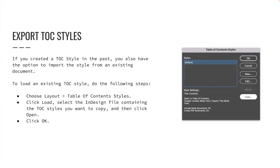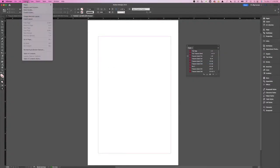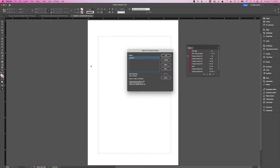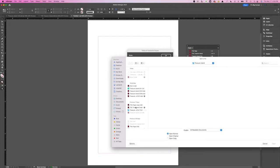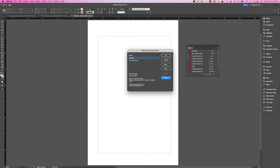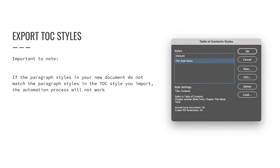If you created a table of contents style in the past, you also have the option to import that style from an existing document. To load an existing TOC style, choose Layout > Table of Contents Styles, click Load, select the InDesign file containing the styles you want to copy, and click Open, then click OK. Note that if the paragraph styles in your new document do not match those in the imported TOC style, you need to edit the TOC style before generating the table of contents — otherwise the automation process will not work.